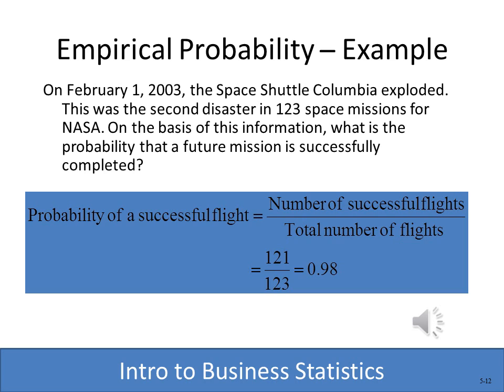Using classical probability, we wouldn't take into account what's happened in the past, and we could say in theory there's a 50-50 chance — it either would be successful or not. So you can see that in the long run, using the Law of Large Numbers, empirical probability is probably a little bit more accurate when you're dealing with things that are more complex than simply flipping a coin.